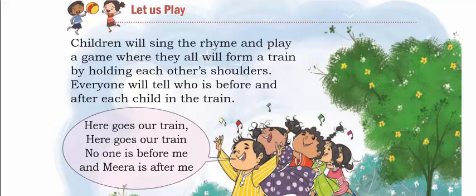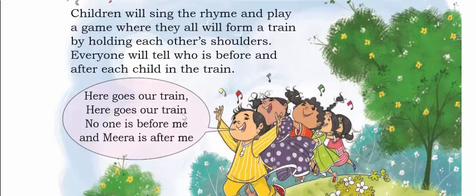Let us play — children will sing the rhyme and form a train by holding each other's shoulders. Everyone will tell who is before and after each child in the train. You can do this activity with your family members, parents, or siblings — form a line. Here goes our train! No one is before me, and Meera is after me. You can say my sibling is before me, or my father is before me, my mother is after me. In this way you will learn positions.